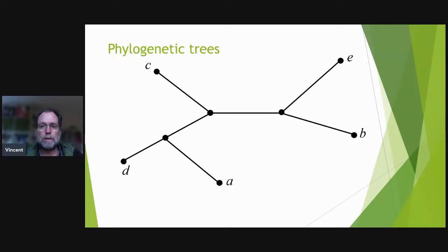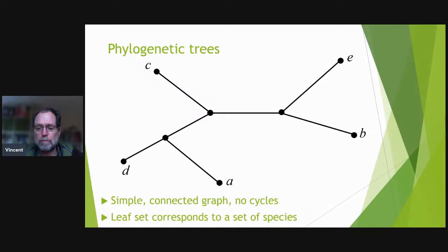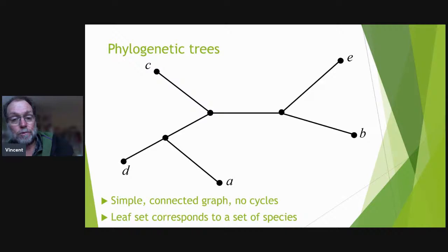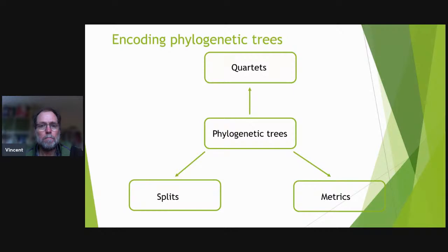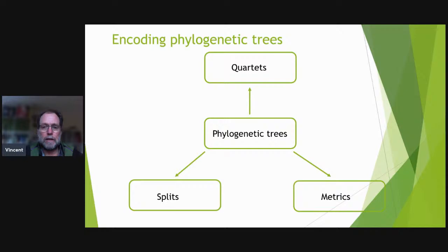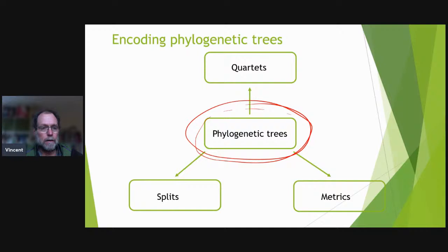So what do we mean by a phylogenetic tree? From a mathematical point of view, it's a simple connected graph with no cycles, and its leaf set corresponds to some set of species — say A through E, maybe cats, dogs, humans, etc. In phylogenetic combinatorics, we're interested in ways to manipulate and understand the mathematical properties of phylogenetic trees and related structures.